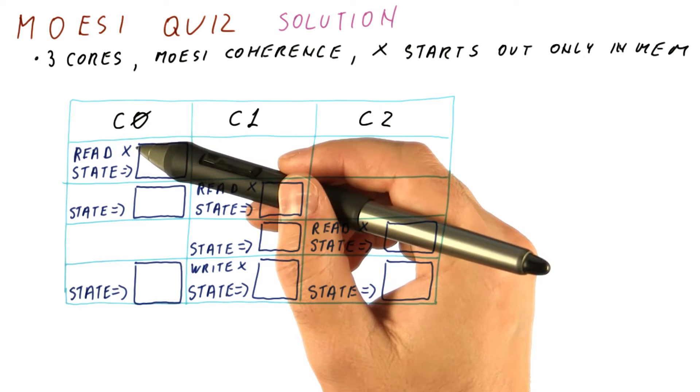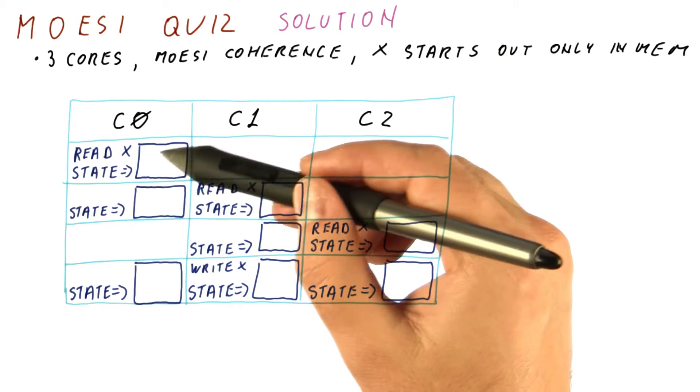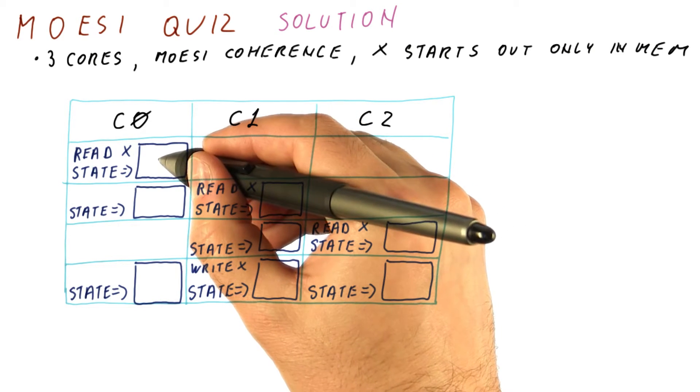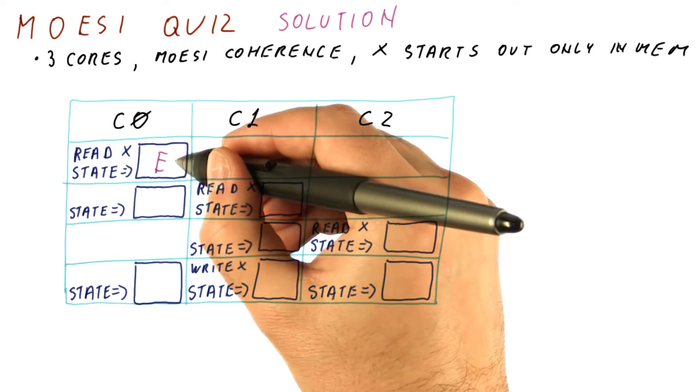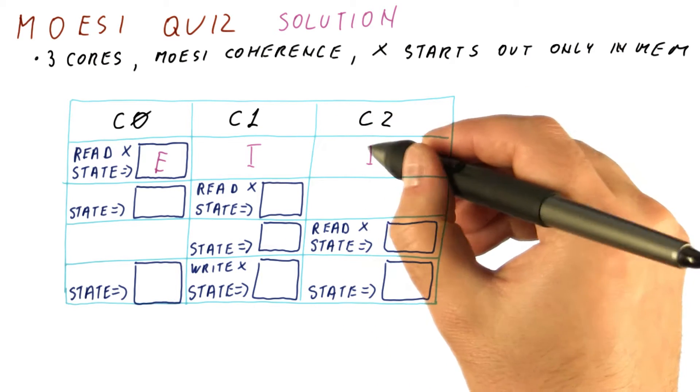When C0 reads, it detects that it's the only one who actually has a copy of the block, and because it's doing a read, it doesn't go into the modified state. It goes into the exclusive E state. The others keep the block in the I state.